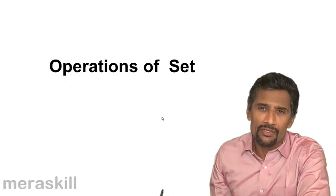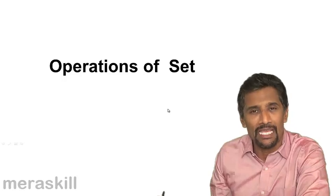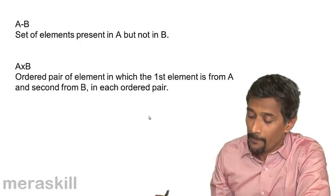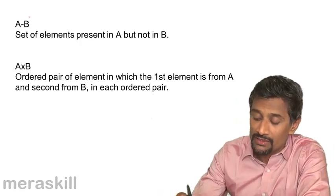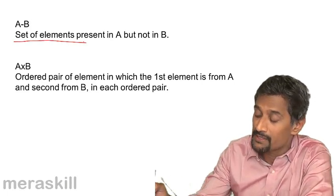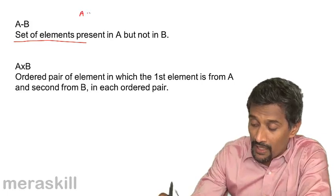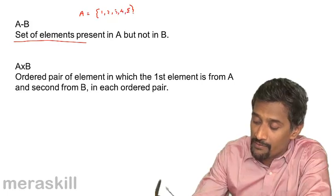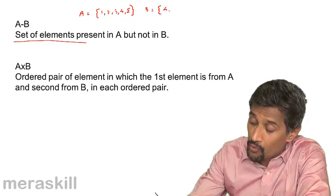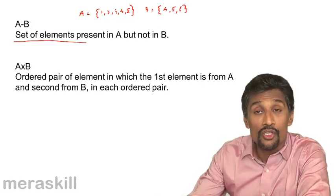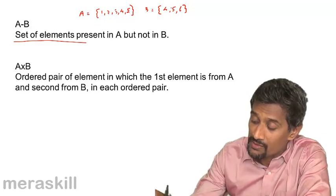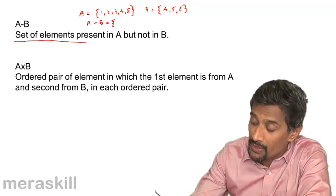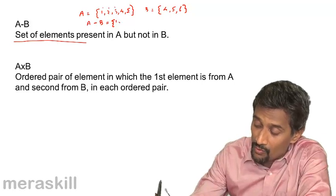Now we're going to take up operations of sets, which includes operations like A minus B and the product of sets. A minus B is the set of elements present in A but not in B. For example, if A is {1, 2, 3, 4, 5} and B is {4, 5, 6}, then A minus B contains all elements of A not present in B, which is {1, 2, 3}.